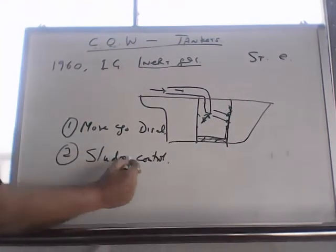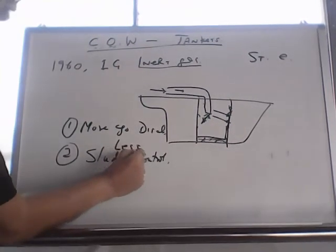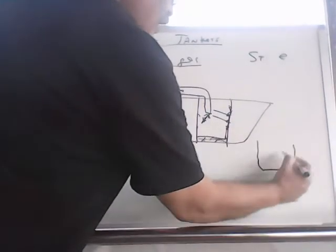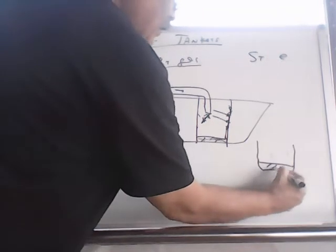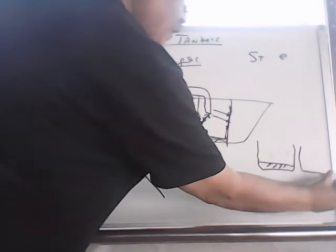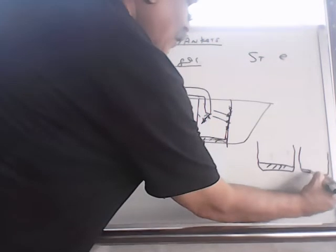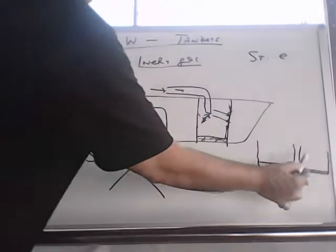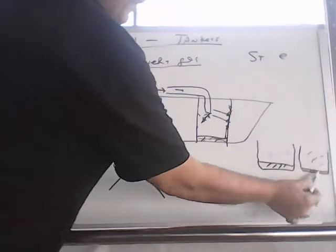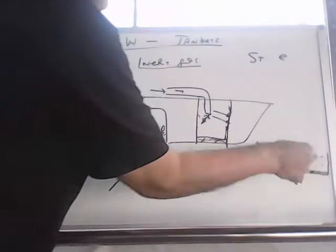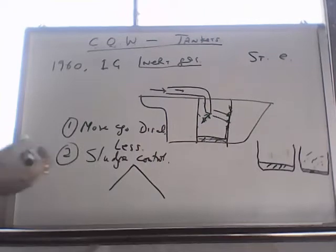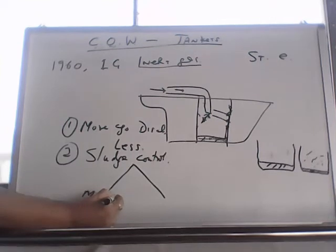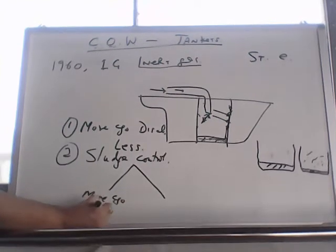So if you have less sludge there are two benefits. Like if you have a tank here in which you have 2% of sludge and you have another tank here which has less sludge that is only 1%. So when you load your next cargo you have more space to load if you have less sludge. So more cargo is loaded in the next voyage.